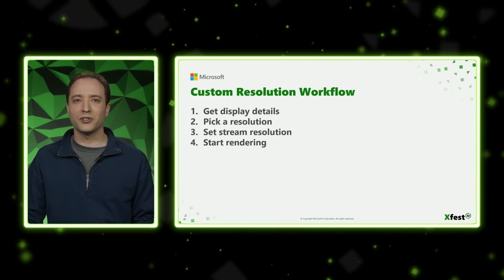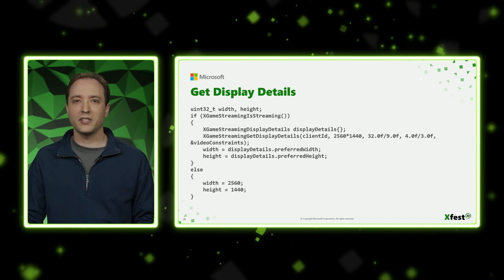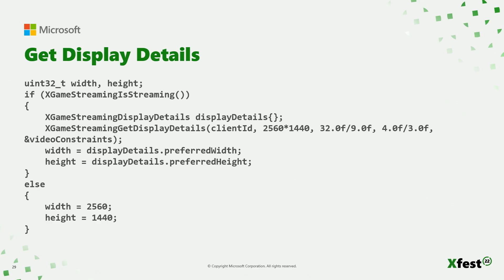So let's say that you would like to add custom resolution to your game. Let's dive into how to go about that — we're going to go into detail on each of four steps. Starting with GetDisplayDetails. Here in this code sample, we're going to start by checking xGameStreaming is streaming, which just tells us: is the game streaming right now? If it's not, we can go ahead and pick a hard-coded default — in this example, 1440p. But if we are streaming, we're going to call xGameStreamingGetDisplayDetails, which fills in an xGameStreamingDisplayDetails struct, and we pull the preferred width and preferred height out of that — the ideal width and height to stream to. We're also passing in 2560 by 1440 and 32 by 9 and 4 by 3 — that's the set of your game's constraints: a max resolution and the aspect ratios it can handle. The idea is that we simplify the output of the API and limit it to only resolutions and aspect ratios that your game can handle.